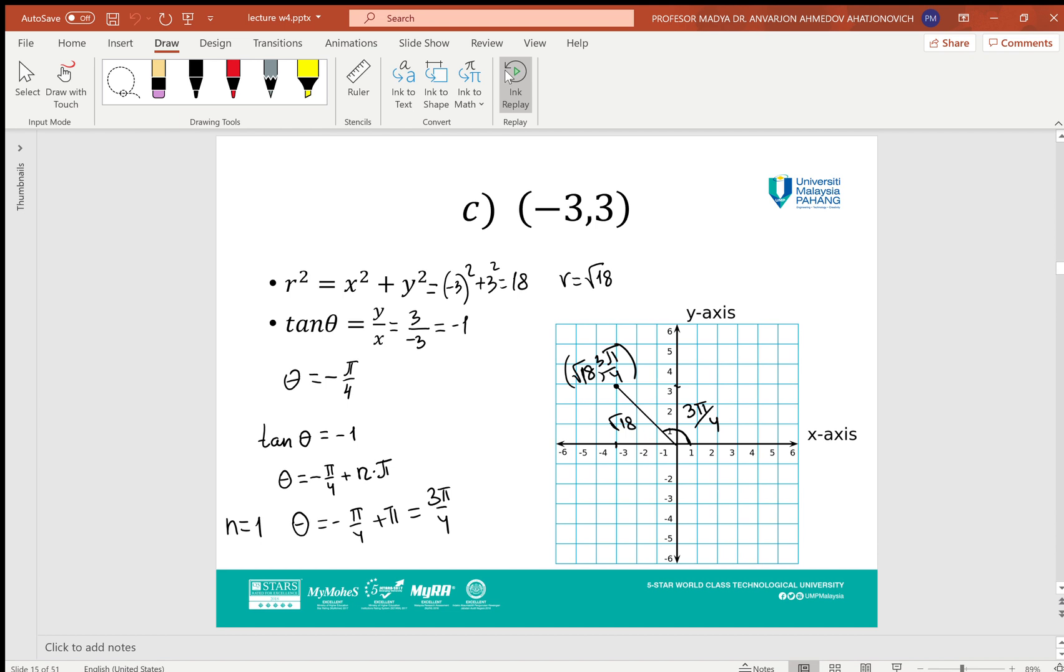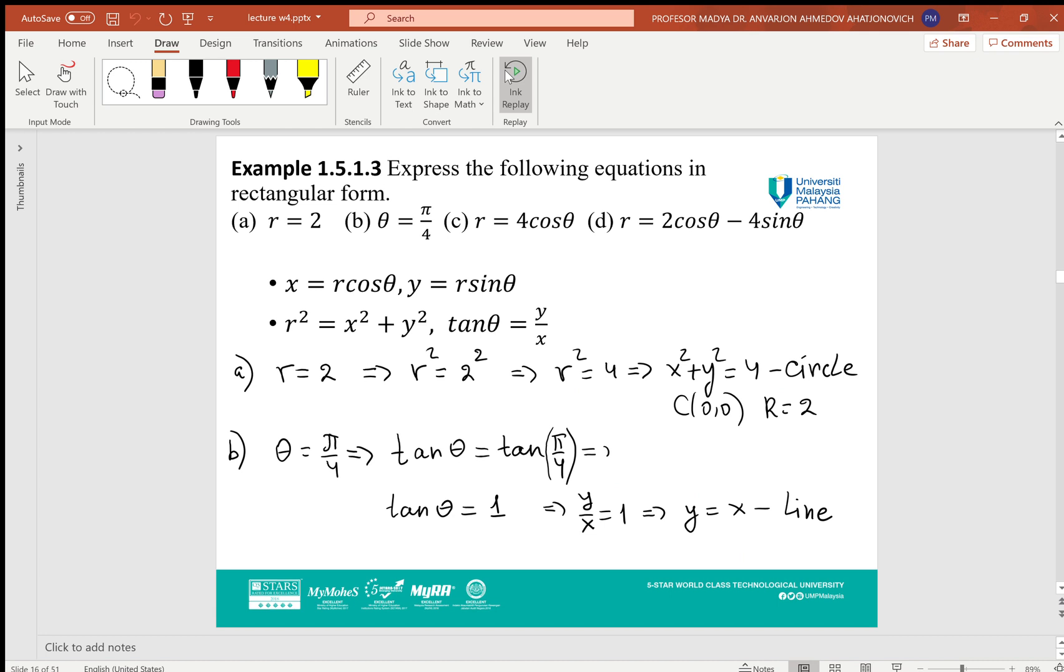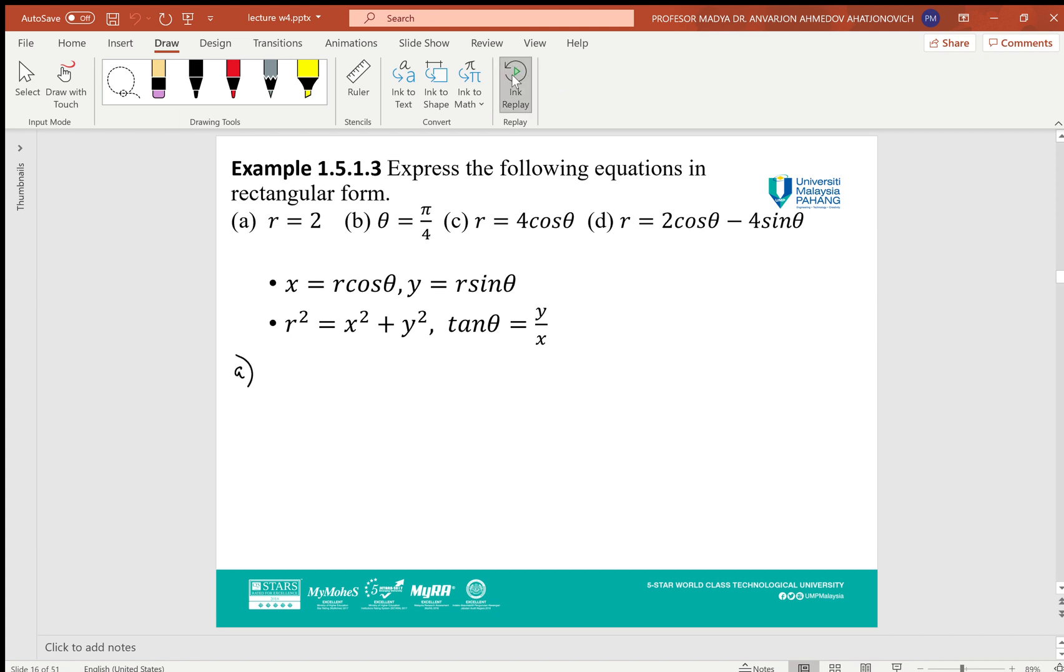By a similar way, we can express equations in rectangular form if they are given in polar coordinates and vice versa. For example, let's consider this example. Part a: r = 2. If we want to transfer it to rectangular form, we replace r by √(x² + y²). Then the equation becomes x² + y² = 4, which is actually a circle of radius 2 centered at (0, 0).